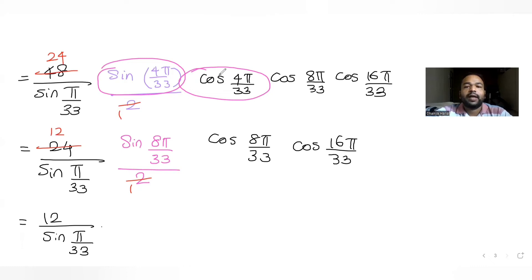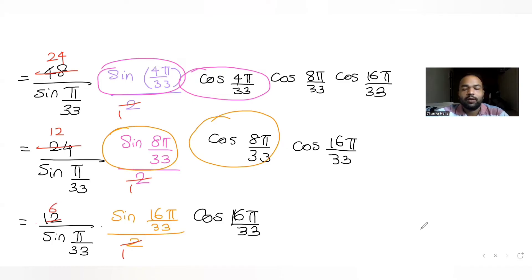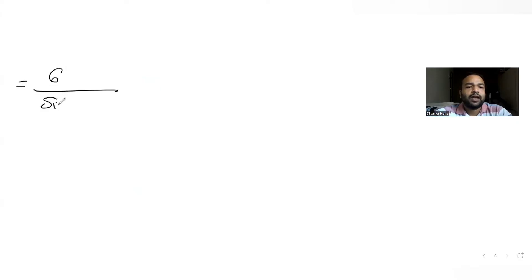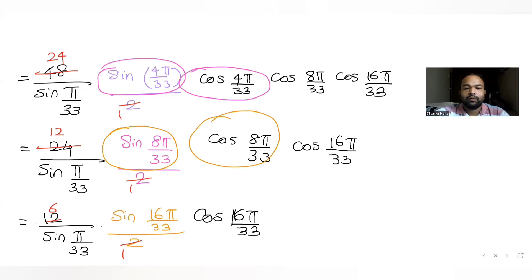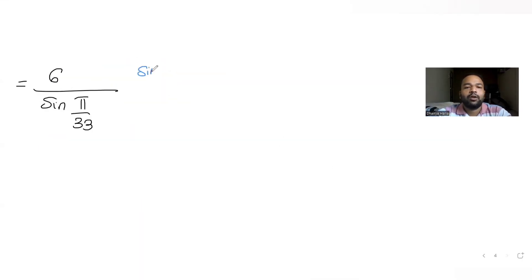Applying the identity once more to sin(8π/33)·cos(8π/33) = sin(16π/33)/2, with cos(16π/33) still remaining. Cancelling 2 from 12 gives 6/sin(π/33). Now applying the identity one final time: sin(16π/33)·cos(16π/33) = sin(32π/33)/2.